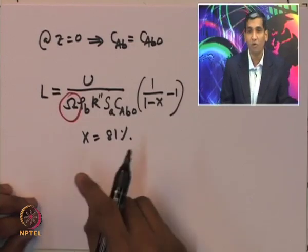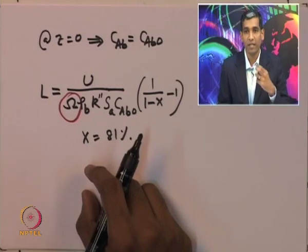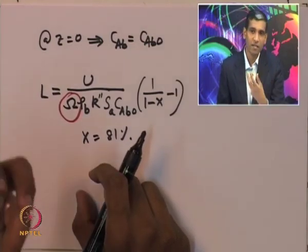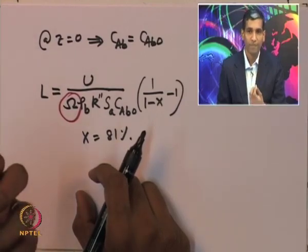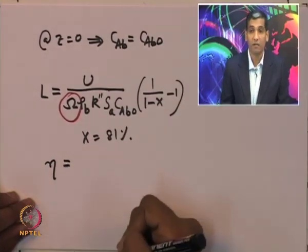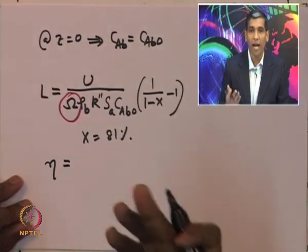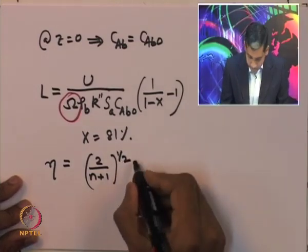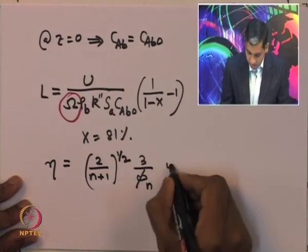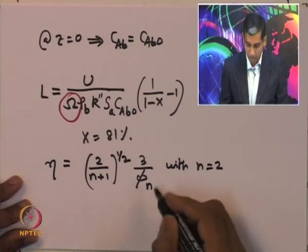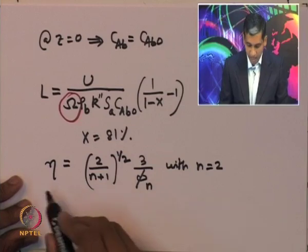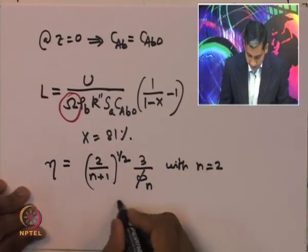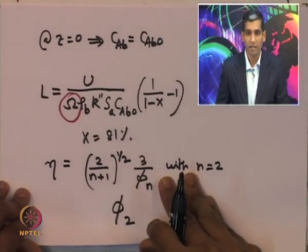The first step is to find out what is the overall effectiveness factor. The overall effectiveness factor is a combination of the resistance offered by the internal effectiveness factor and the resistance because of external mass transport. To find the effectiveness factor eta for a general nth order reaction, it is given by the square root of 2 divided by (n plus 1), multiplied by 3 divided by the corresponding Thiele modulus, with n equal to 2.